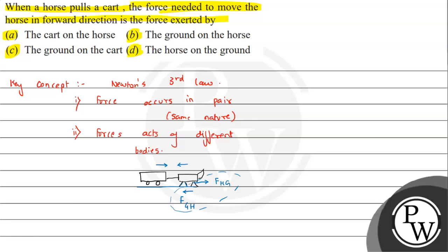If we look at the options, option B will be the answer: the ground on the horse. The ground force applying on the horse is making the horse move forward. So B is the answer for this question. I hope you understood the solution. All the best.